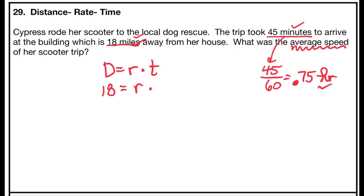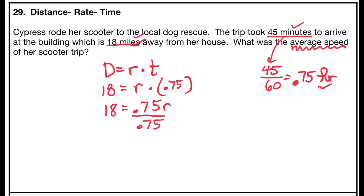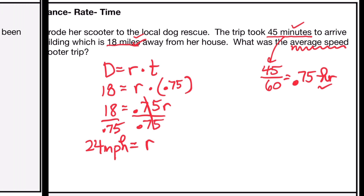Substituting into d = r × t: 18 = r × 0.75. Dividing both sides by 0.75: r = 18 / 0.75 = 24. The average speed of Cypress's scooter trip to the dog rescue was 24 miles per hour.